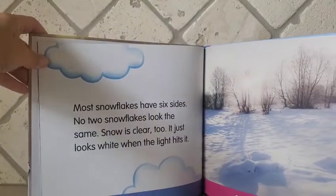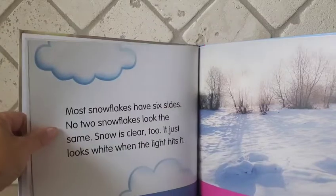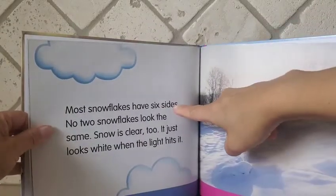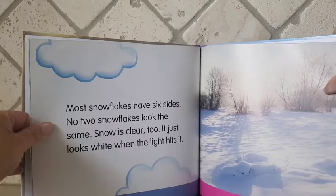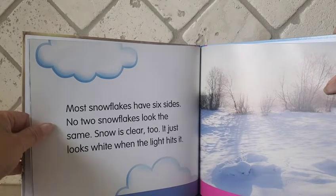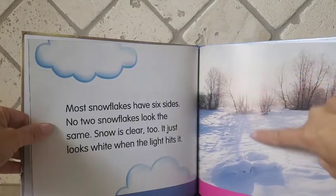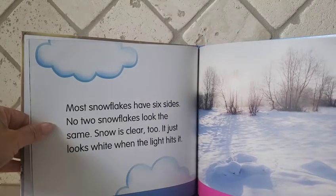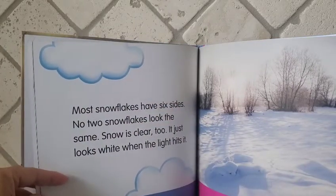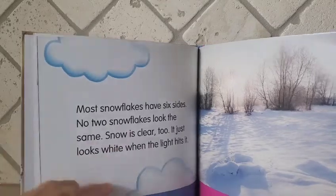Most snowflakes have six sides. Snowflakes have six sides. No two snowflakes look the same. Snow is clear too — it just looks white when the light hits it. Sunlight bounces off the snow. What do we need to remember about this page? Snowflakes have six sides, they don't look the same, and snow is actually clear. They just look white because sunlight bounces off the snow.